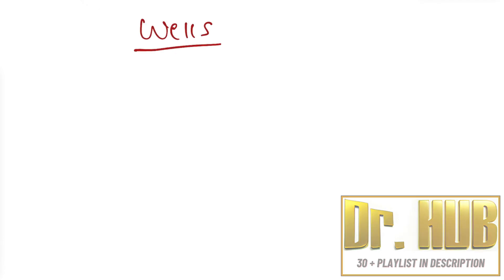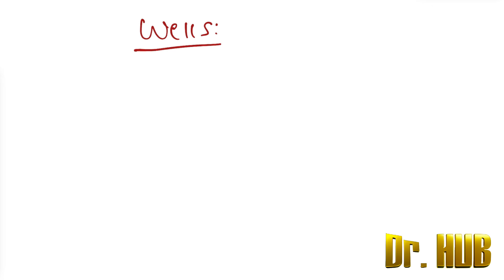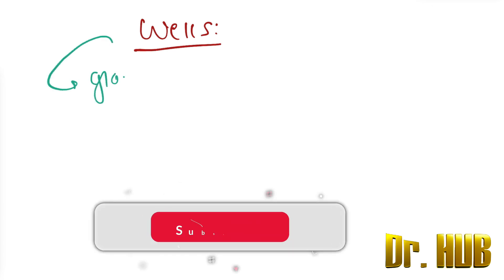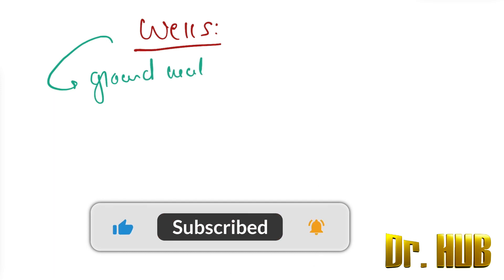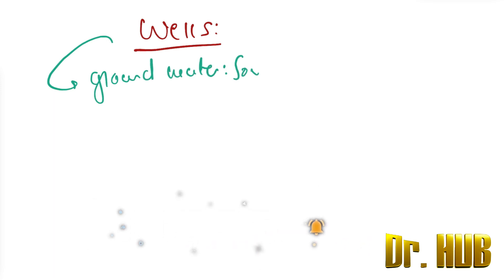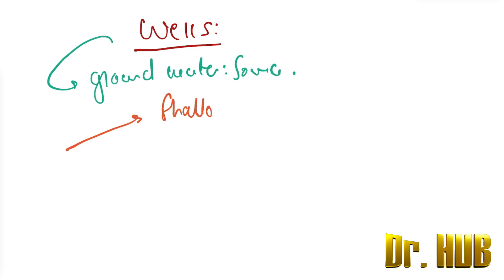Hey guys, this is Dr. Hub. Now we are going to look at wells. Wells are a source of groundwater and are widely used in India. There are two types of wells — they may be shallow or they may be deep.